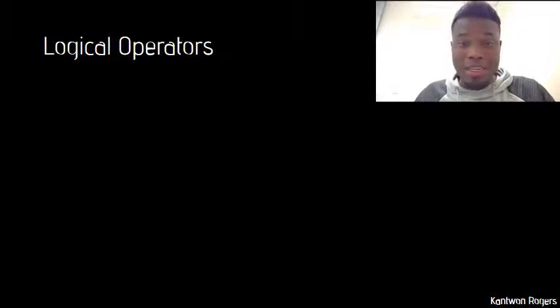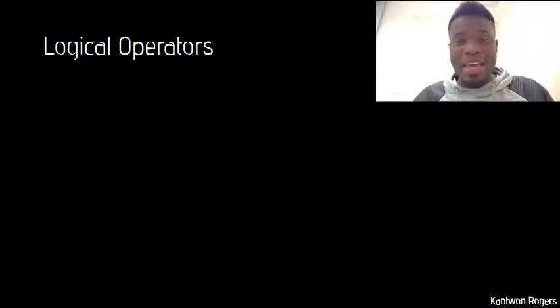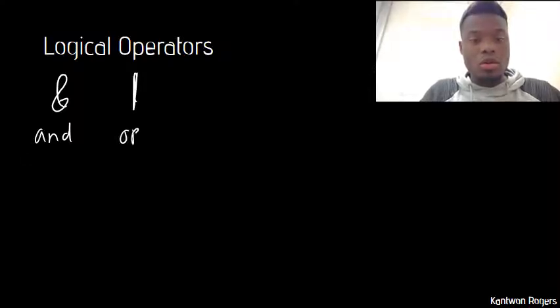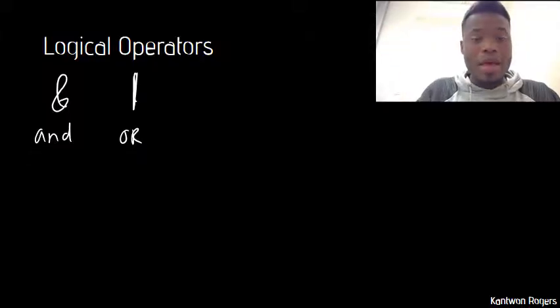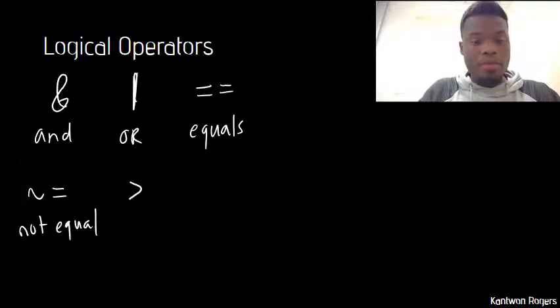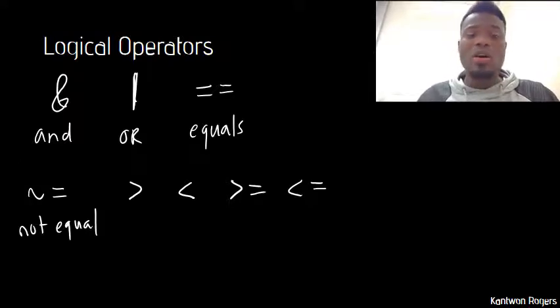In addition to arithmetic, we can also perform logical operations on variables and values. Anytime we use logical operators we get back true or false values. A list of logical operators in MATLAB includes: the ampersand (&) for AND, the pipe (|) for OR — which is located above the Enter key using Shift+backslash — the double equals (==) for logical equality, the tilde-equals (~=) for not equal, greater than, less than, greater than or equal to, and less than or equal to.